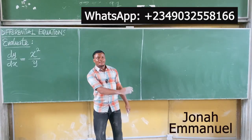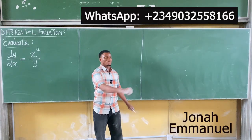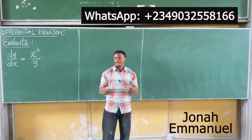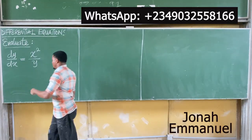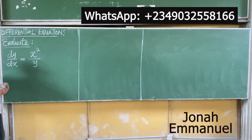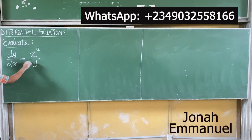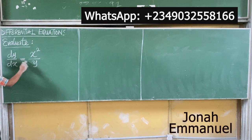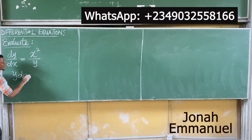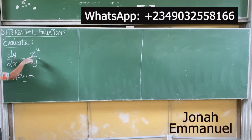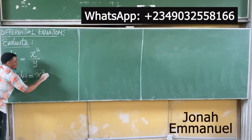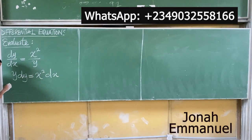Alright, another question on variable separable. Move y to the y side and x to the x side. Cross-multiplying gives y dy equals x squared dx.